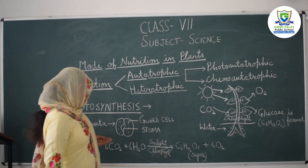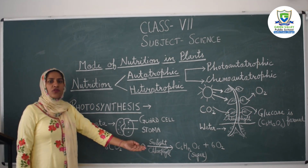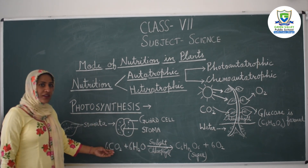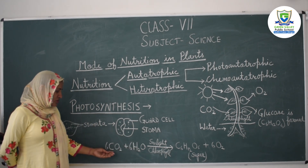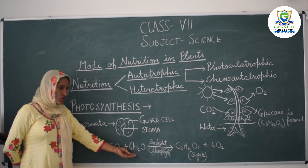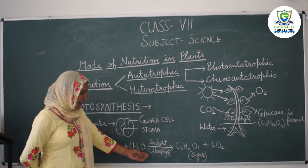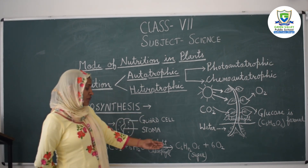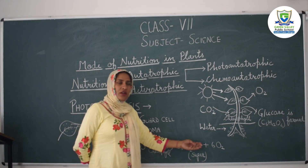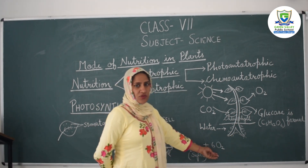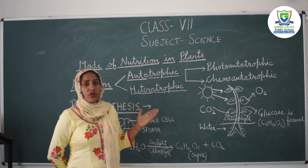We can summarize the process of photosynthesis by this equation. CO2 is carbon dioxide and H2O is water. Both of these, in the presence of sunlight and chlorophyll, are used to make food in the form of sugar or glucose, C6H12O6, along with oxygen as a product. Now I hope you understand why it is called autotrophic nutrition — because green plants use certain raw materials to make their own food.